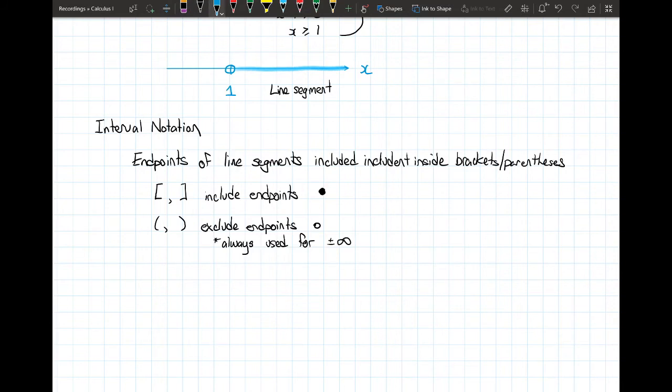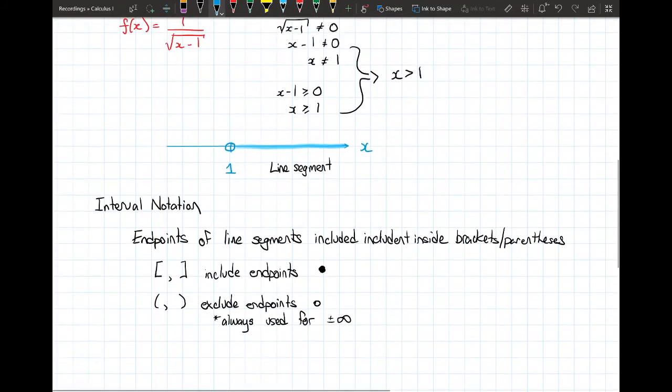Going back to this example, we have all of the real numbers greater than 1. You can see there's a single line segment that starts at 1 and goes off to infinity. This can be represented in interval notation as a round bracket around the 1 because it's not included, going off to infinity, which always has a round bracket because that's not included either.